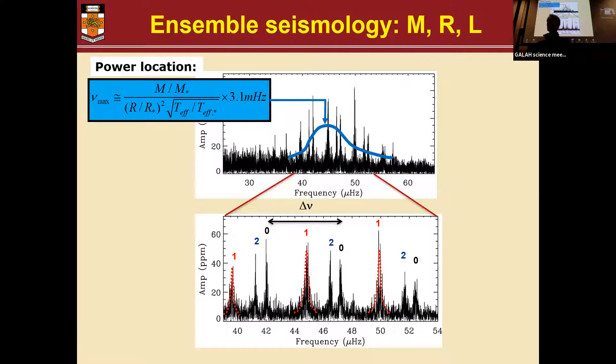So to do real seismology, we would look at individual frequencies, but we are not doing that here. For galactic archaeology, we need thousands of stars. So we are doing ensemble seismology, or as I like to call it, the IKEA version, which is kind of wholesale.